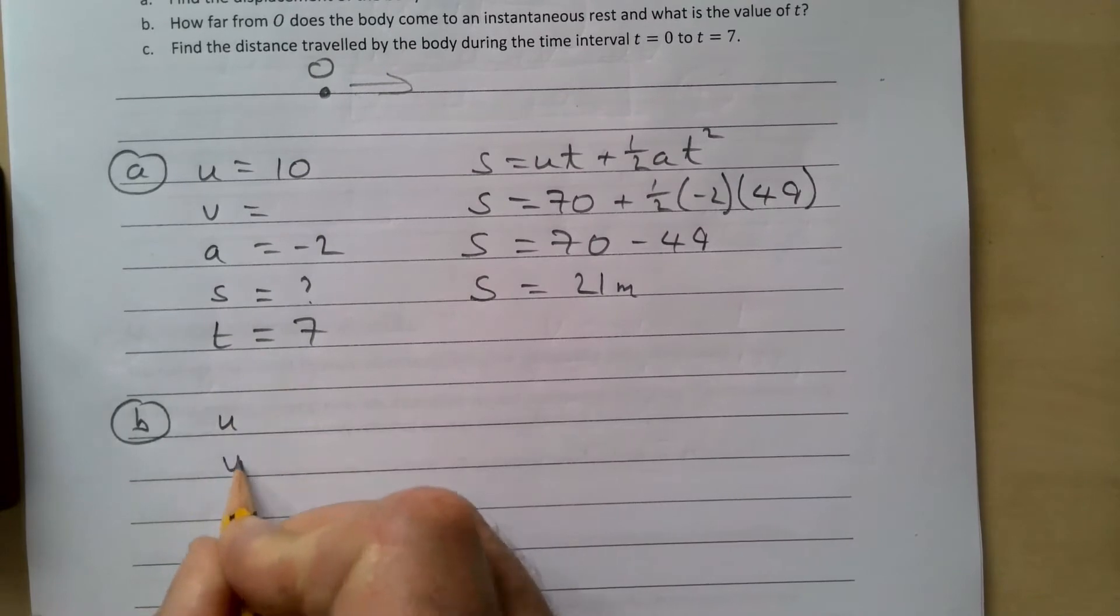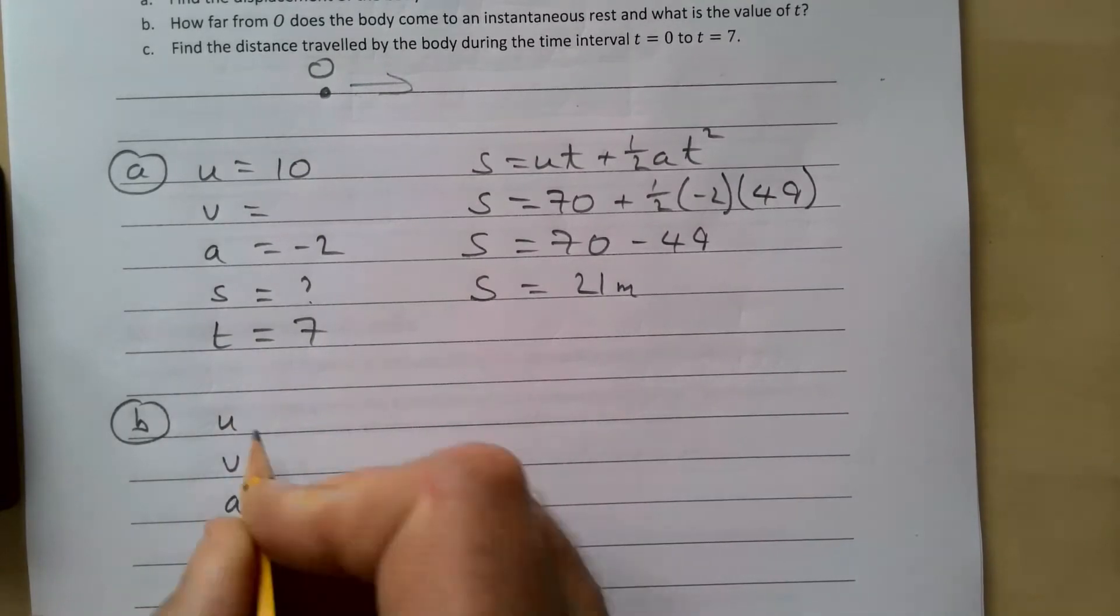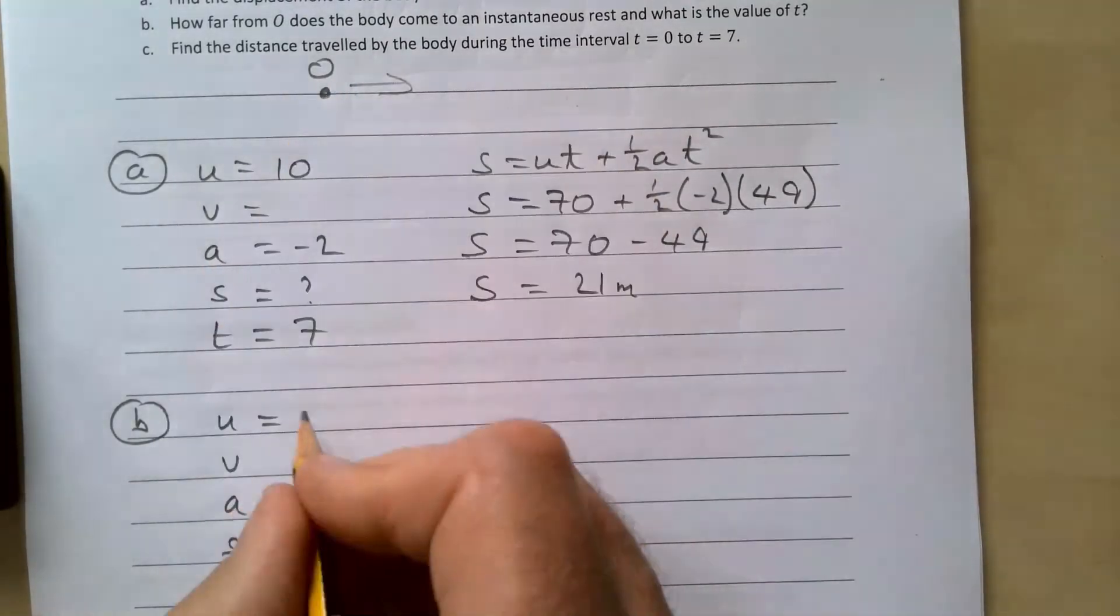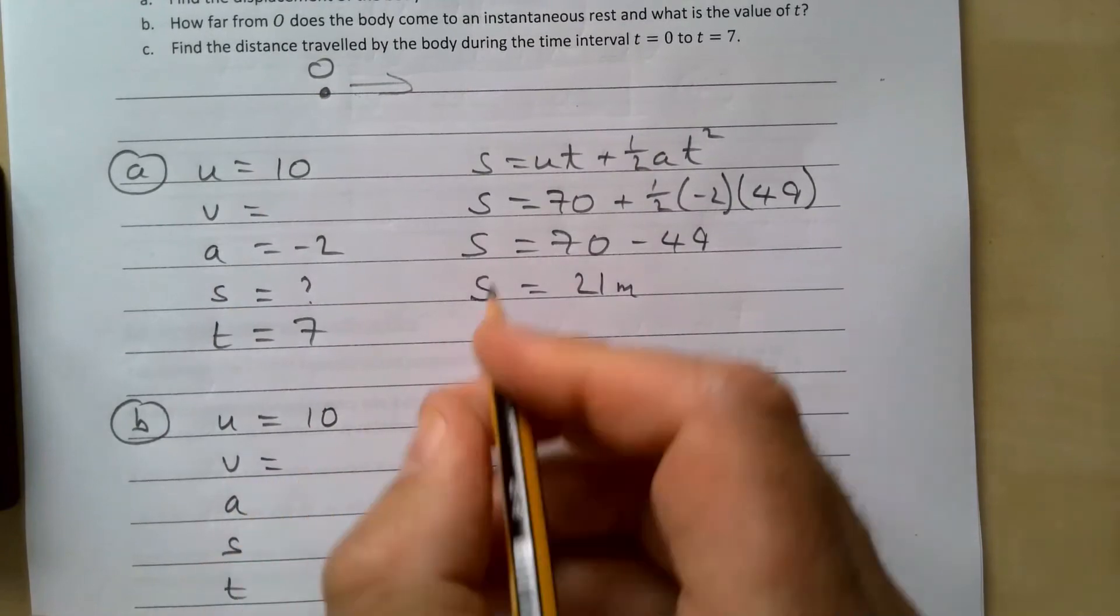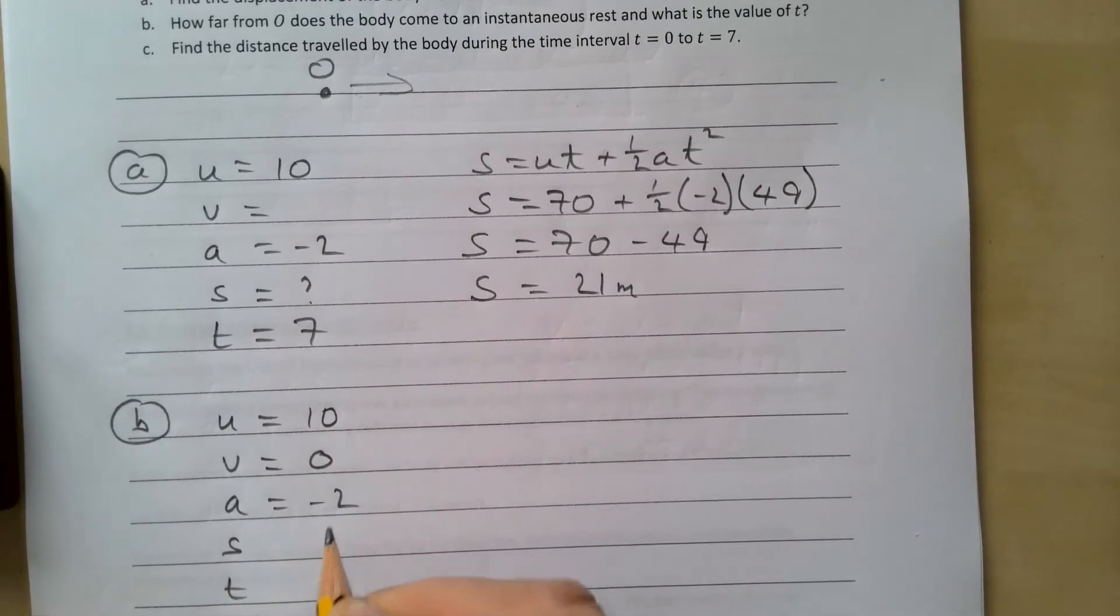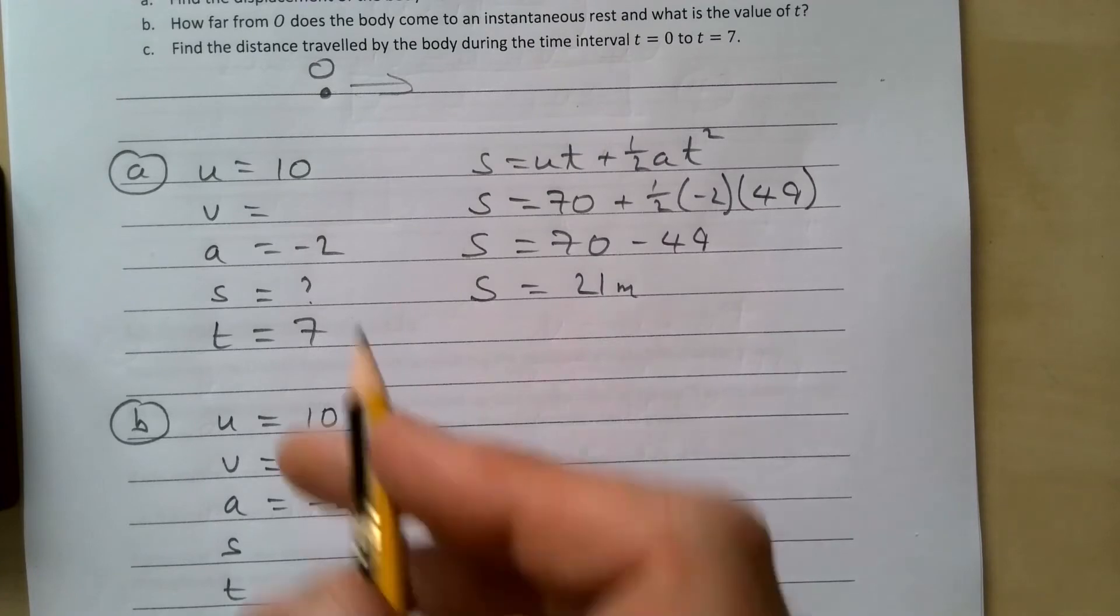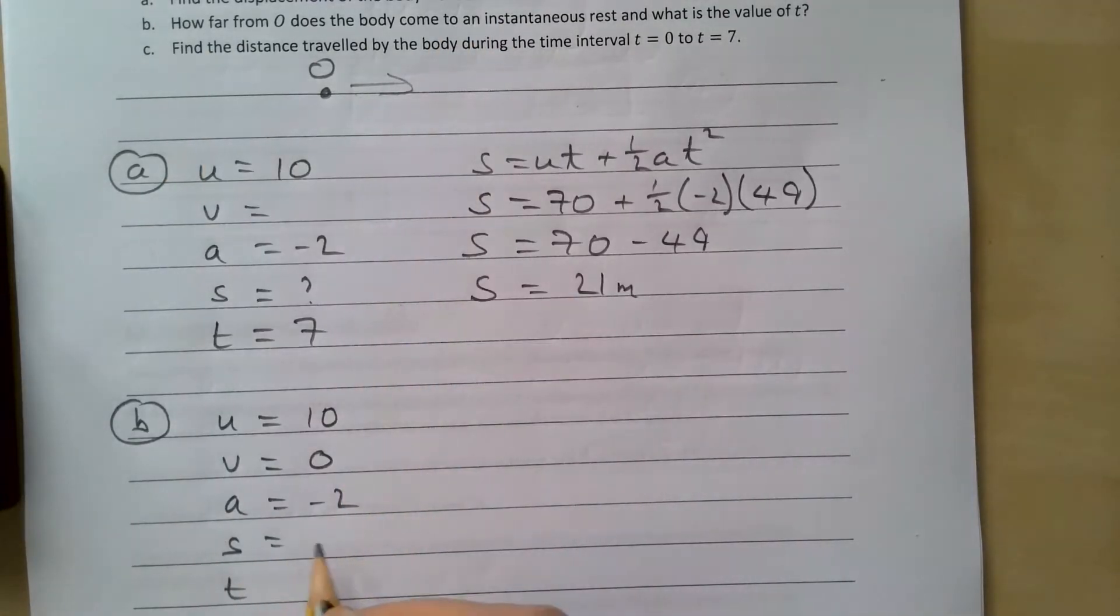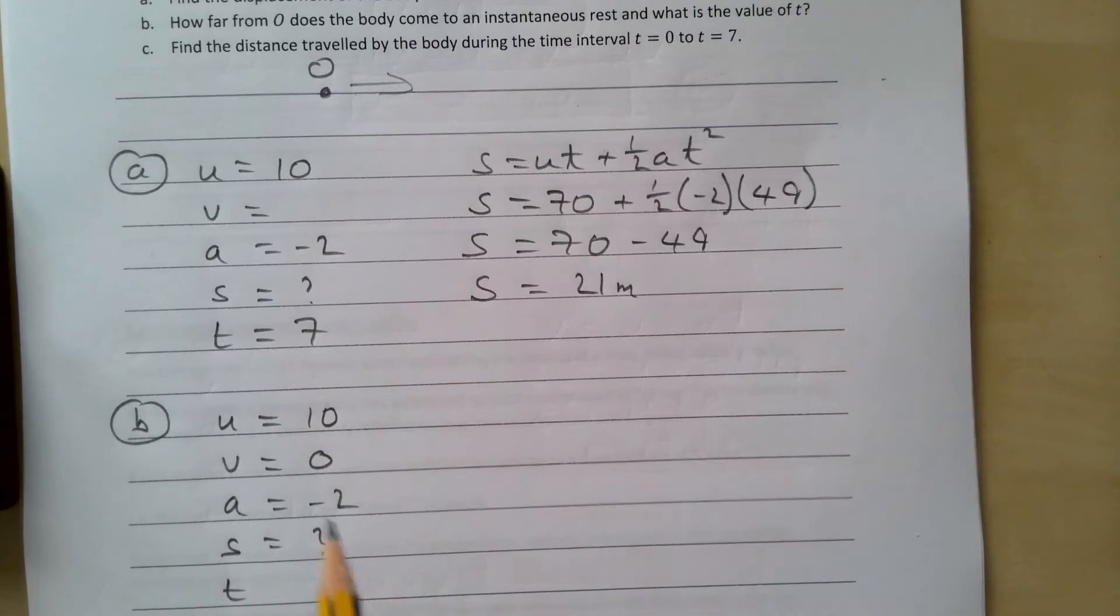u, v, a, s, and t. u is 10, v we do know because it's come to rest, so that means our final velocity for this particular journey is going to be zero. And our a then is minus two, and we want to know how far it is, so s is the one we're looking for.